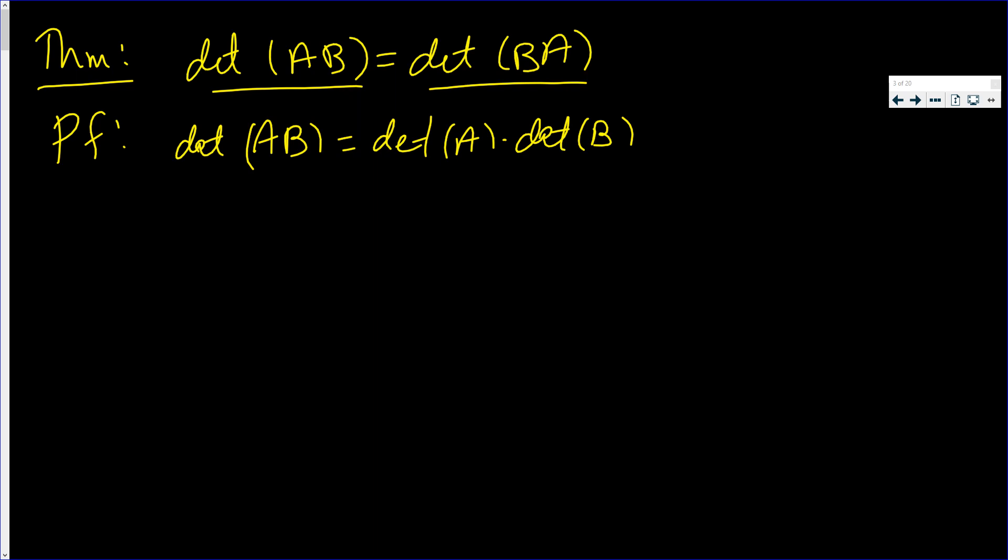Now it's very important to understand what you're dealing with. The determinants are just real numbers. The determinant of a matrix, they're just real numbers and the real numbers have their commutative property. This is the determinant of B times the determinant of A.